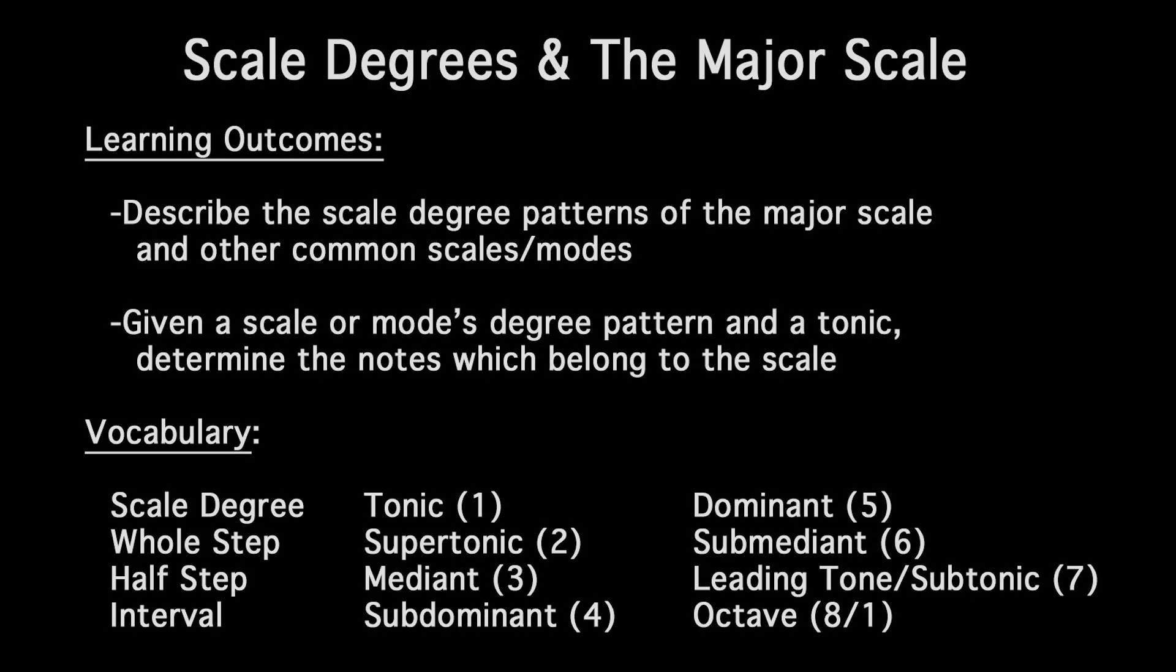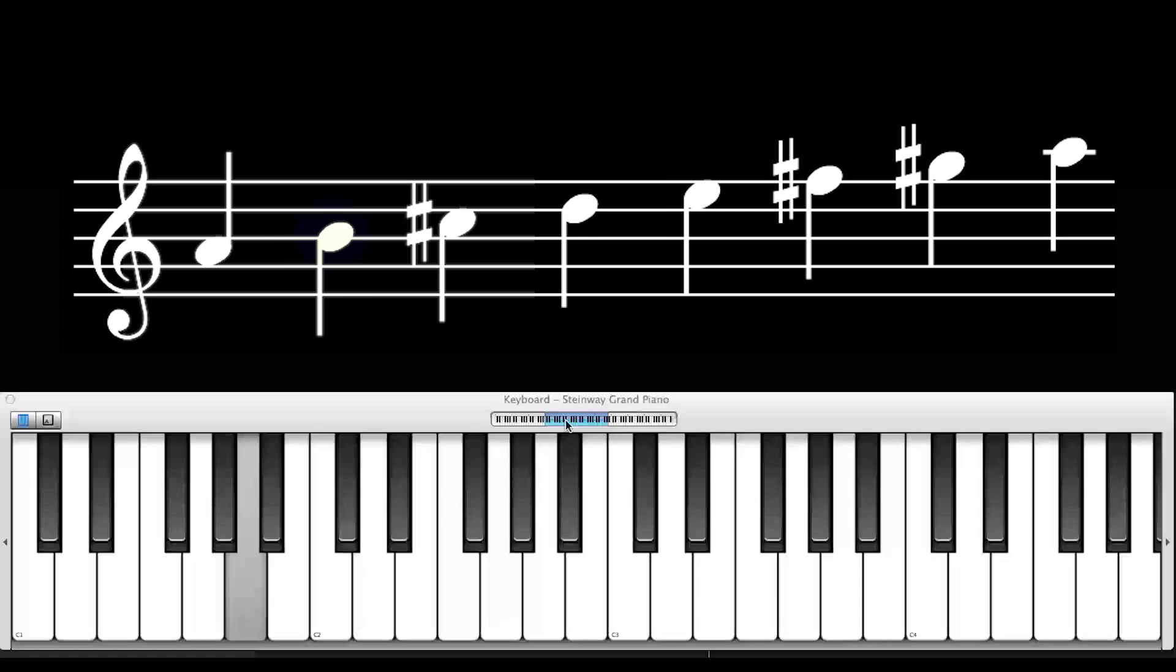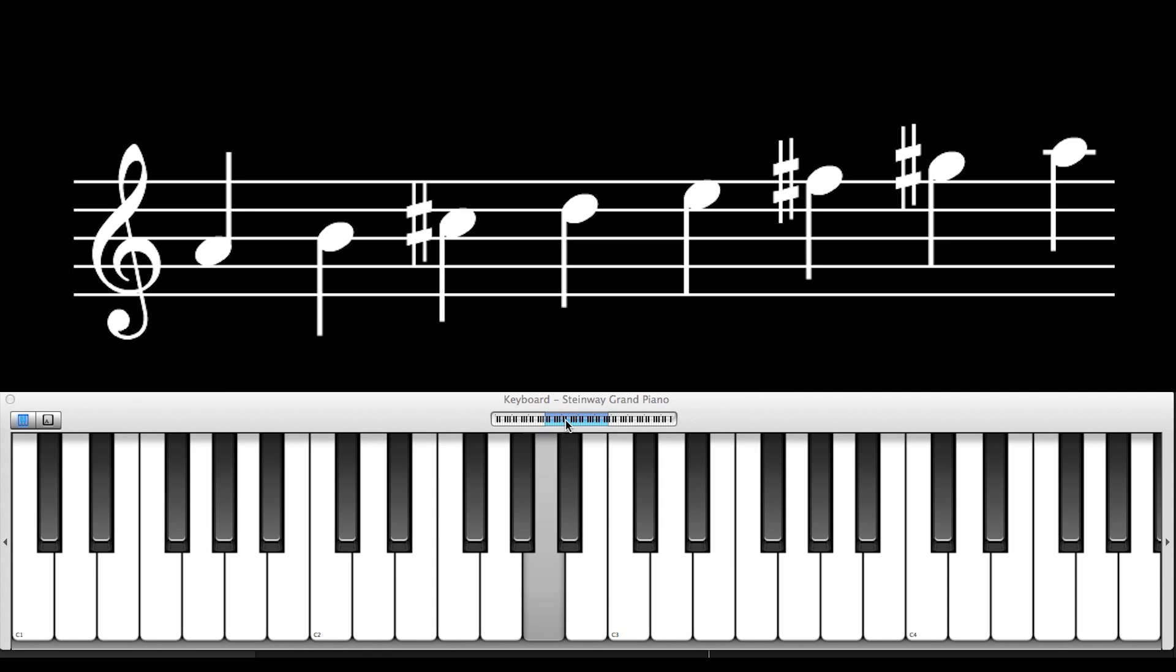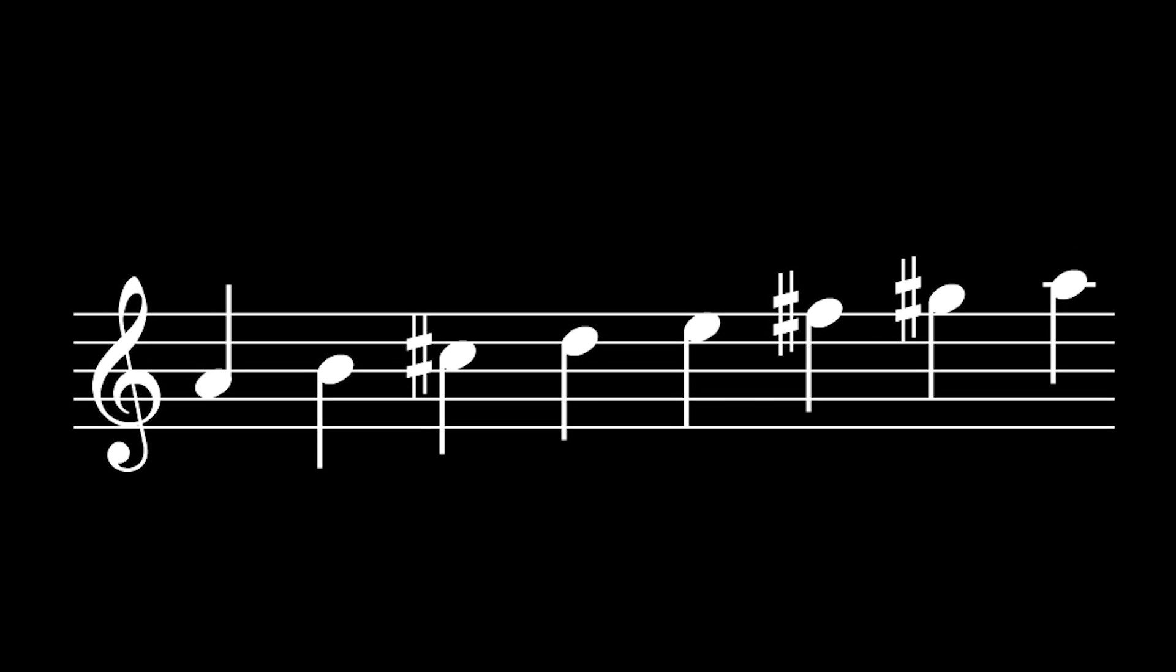Here's the major scale in the key of A. The notes of the major scale in the key of A are A, B, C-sharp, D, E, F-sharp, and G-sharp. After the last note, G-sharp, the scale returns to A. This is the octave of the first A.